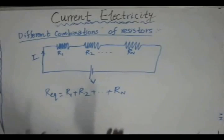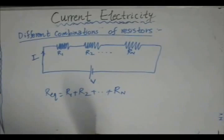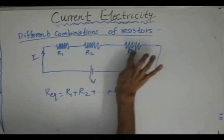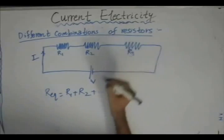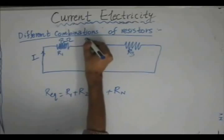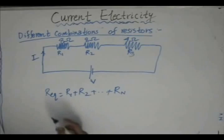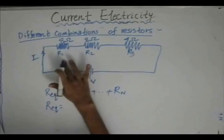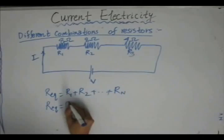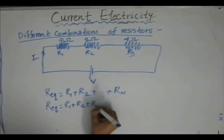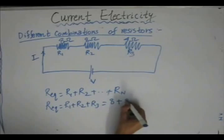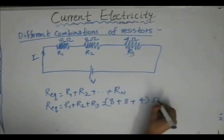This appears simple, but let us develop a good understanding through a numerical example. We consider three resistors R1, R2, and R3 and assign values: R1 = 8 ohm, R2 = 8 ohm, and R3 = 4 ohm. Applying the formula, the equivalent resistance is R1 + R2 + R3 = 8 + 8 + 4 = 20 ohms.